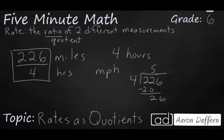And we've got four goes into 26, six times 24. So we're close. I'm going to add a decimal zero. Bring that zero down. So it looks like we're going to have 56.5, 56 and 5 tenths. And we can write this as miles per hour.